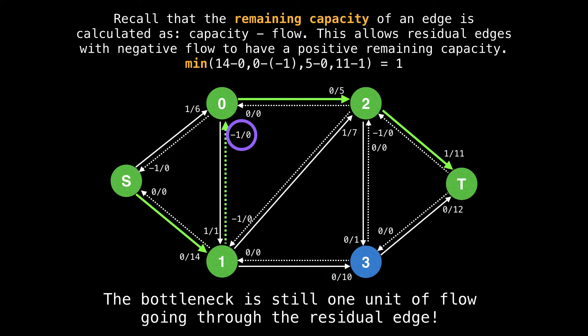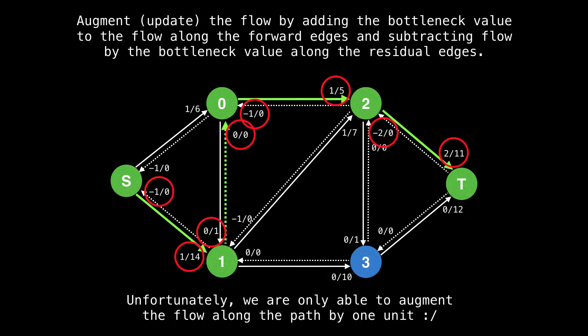Recall that the remaining capacity of an edge is calculated as the capacity minus the flow. This allows residual edges with a negative flow to have a positive remaining capacity. Notice that yet again, the bottleneck value for this path is only one unit of flow. Now update or augment the flow. Do this by adding the bottleneck value to the flow along the forward edges and subtracting the flow by the bottleneck value along the residual edges.